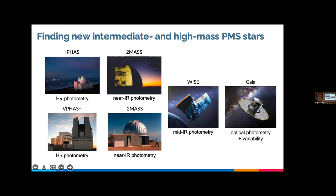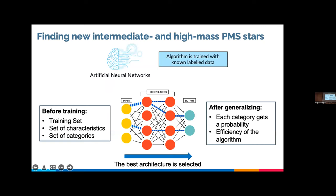We put all that information into the machine learning framework. As you know, artificial neural networks use supervised learning, so the algorithm needs to be trained with known labeled data. We selected our training set from the known Herbig catalog, selected the characteristics, and spent most of the work deciding on the best algorithm and hyperparameters for this particular problem. At the end we had an artificial neural network that was trained and able to generalize — it could be applied to all sources that had the required photometric information.